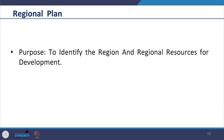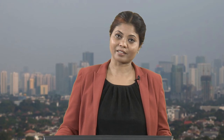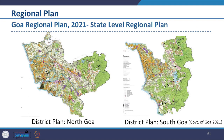Looking at the purpose of the regional plan, the purpose is to identify the region and regional resources for development, within which plans for settlements — both urban and rural — will be prepared and regulated by the district planning committee or metropolitan planning committee. The plan period is 20 years and examples include regional plan, mobility plan and sub-regional plan. For example, we can see the Goa Regional Plan 2021, which is a state-level regional plan prepared based on the two district plans of North Goa and South Goa.